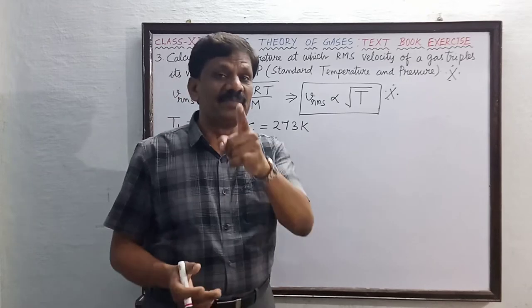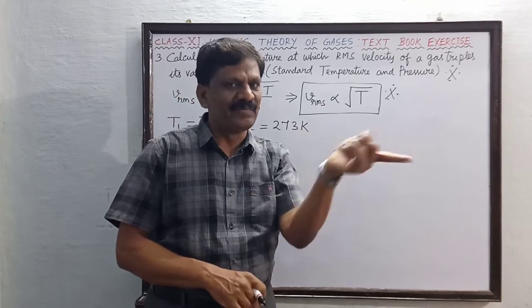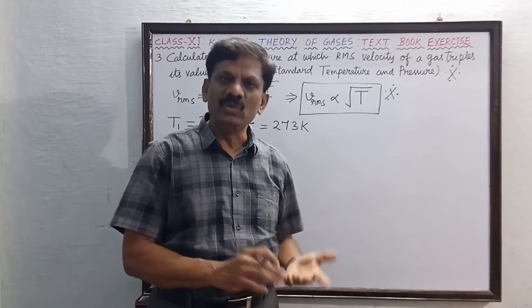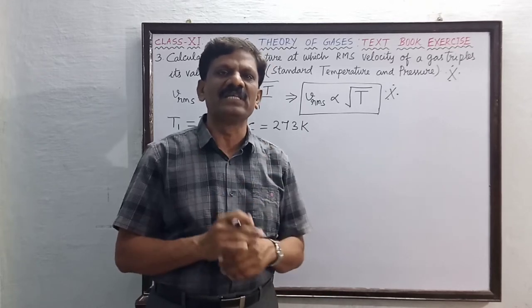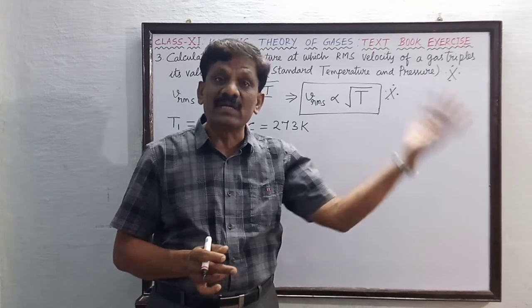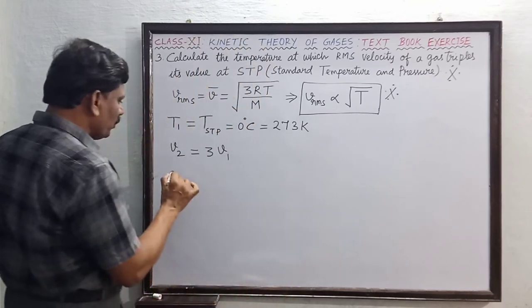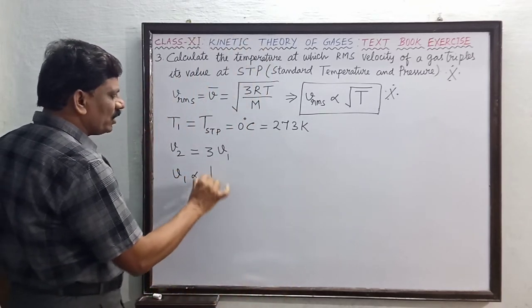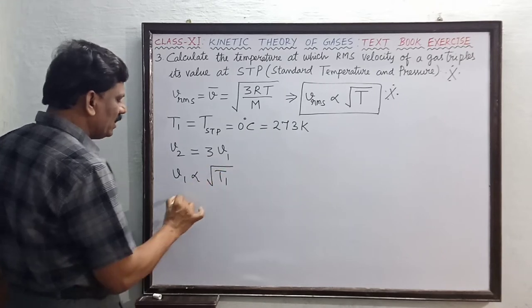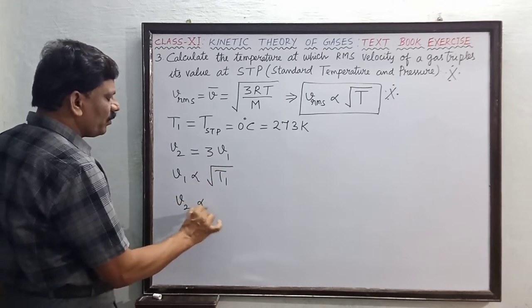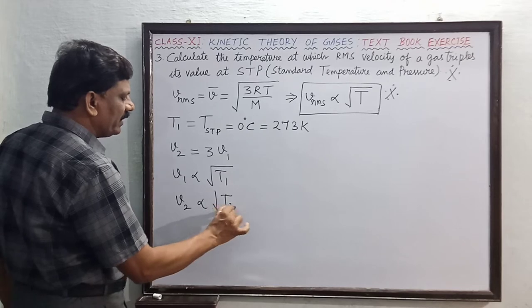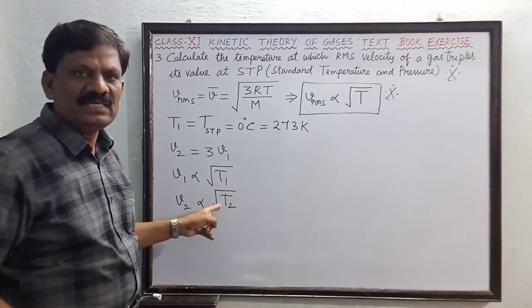At STP temperature, we need to find T2. What is the temperature? This is the temperature we're solving for, and the rms velocity of the gas will be 3 times.